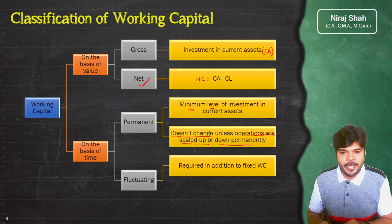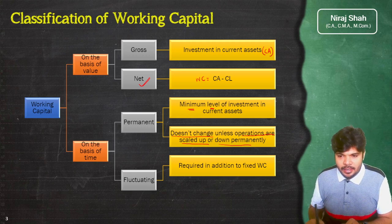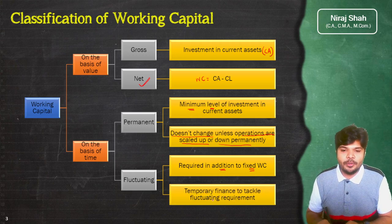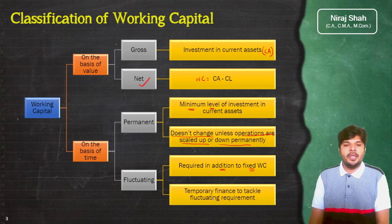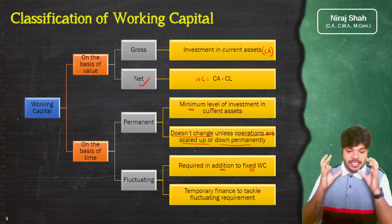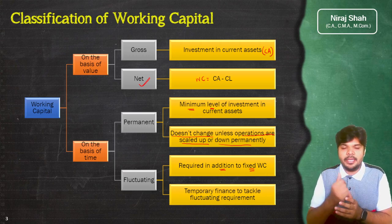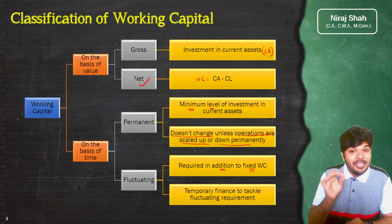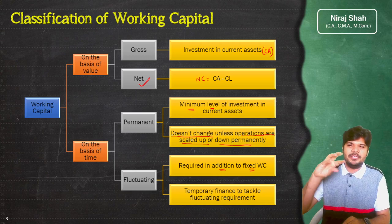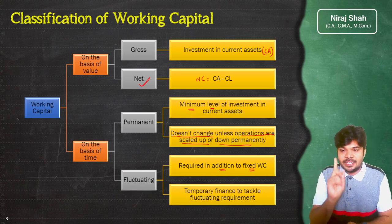Fluctuating working capital ऐसी working capital है जो fixed working capital के over and above extra चाहिए होती है। यह required है but in addition to fixed working capital, और यह temporary finance होती है to tackle the fluctuating requirement। जैसे company को एक बड़ा contract मिला और उसे पूरा करने के लिए raw material ज्यादा खरीदना पड़ा, ज्यादा workers को temporary employ करना पड़ा — तो जब तक contract पूरा नहीं होता, तब तक ही यह temporary working capital requirement है। यह seasonal base पर कभी ज्यादा तो कभी कम होती है, इसीलिए इसका नाम है fluctuating working capital।